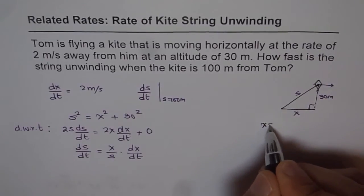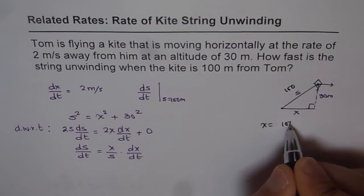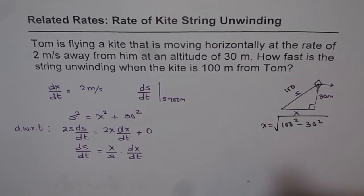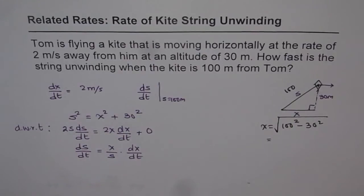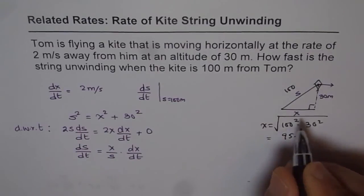So horizontal distance at this time will be, let's find out. So x equals √(s²), which is 100, right? So it is √(100² - 30²). That is what it is. So we can use calculator and figure this out. So 100² - 30² equals 9100. And √9100, we get this as 95.39. So we can write 95.4 as x value.